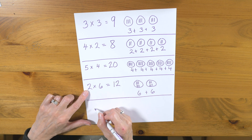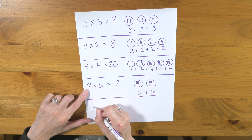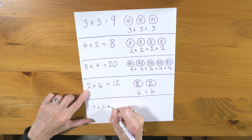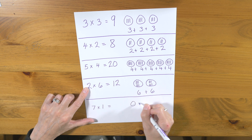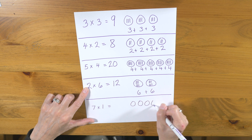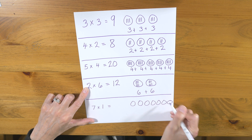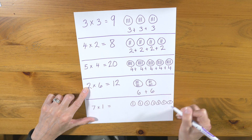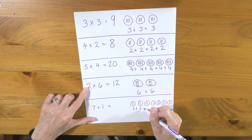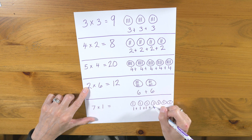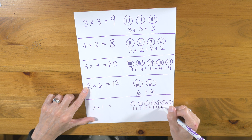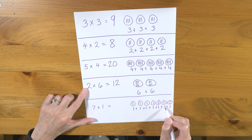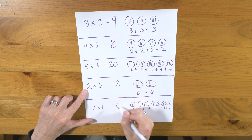How about we do 7 times 1. So we do 7 groups and we put 1 in each. So 1 plus 1 plus 1 plus 1 plus 1 plus 1 plus 1. 1, 2, 3, 4, 5, 6, 7. Our answer is 7.